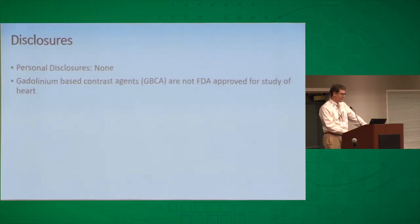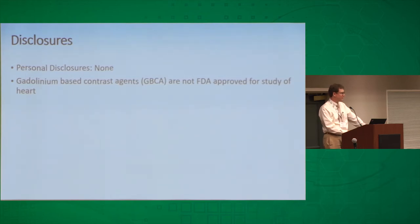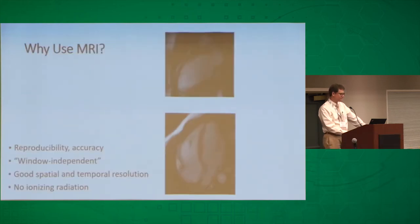I don't have any personal disclosures. The one thing I'd like to mention is that the gadolinium-based contrast agents, or GBCA, which I'll use throughout this discussion, despite all this time, are still not FDA approved for study of the heart — only for vascular tumors — for most of the agents. So why use MRI?